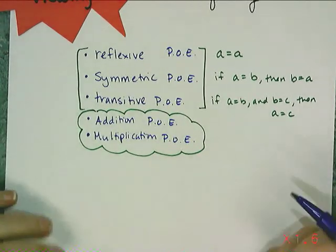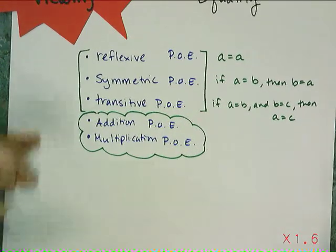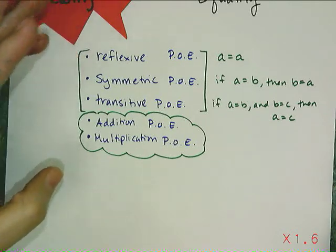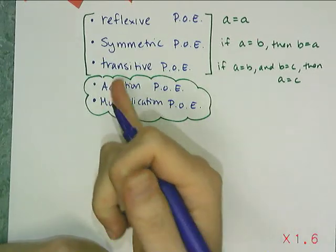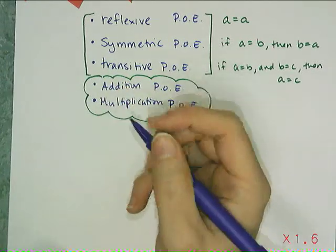And I said there are two cousins, subtraction and division. In reality, they're just these five properties of equality. But in Algebra 1, we say that there are four that we use, these two and their buddies.